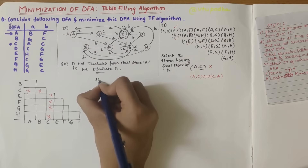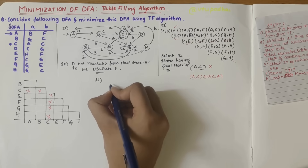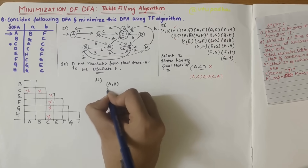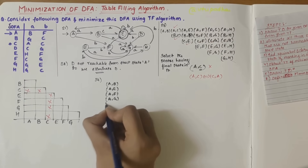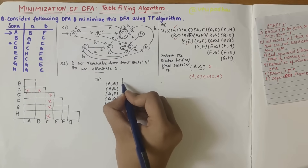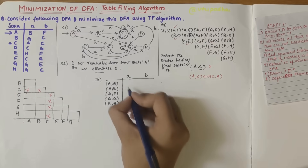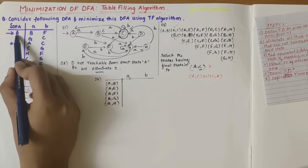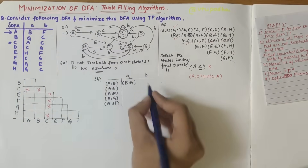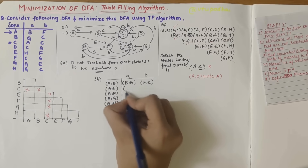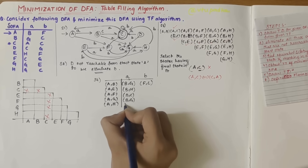In step four, we consider all entries not marked in step three and check their transitions on inputs a and b. For example, a-b on input a gives b-g, and a-b on input b gives f-c. Similarly, a-e on a gives b-h, a-e on b gives f-f. We also compute a-f, a-g, a-h, and their transition results.